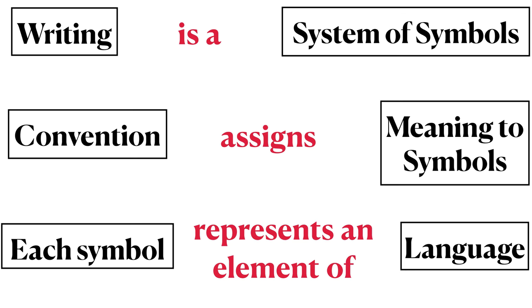We have previously established that writing as a technology consists of a system of symbols. Convention is used to assign meaning to the symbols in the writing system, and each symbol in the writing system represents an element of language.